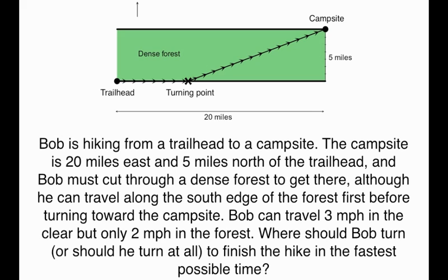Hello and welcome to this screencast where we're going to work a particular optimization problem. Bob is hiking from a trailhead to a campsite. The campsite is 20 miles east and 5 miles north of the trailhead, as shown in the diagram. Whichever way Bob goes, he has to cut through a dense forest. He can travel at 3 miles per hour on the edge of the forest, but only 2 miles per hour inside the forest. So where should Bob turn, if at all, to finish the hike in the fastest possible time?